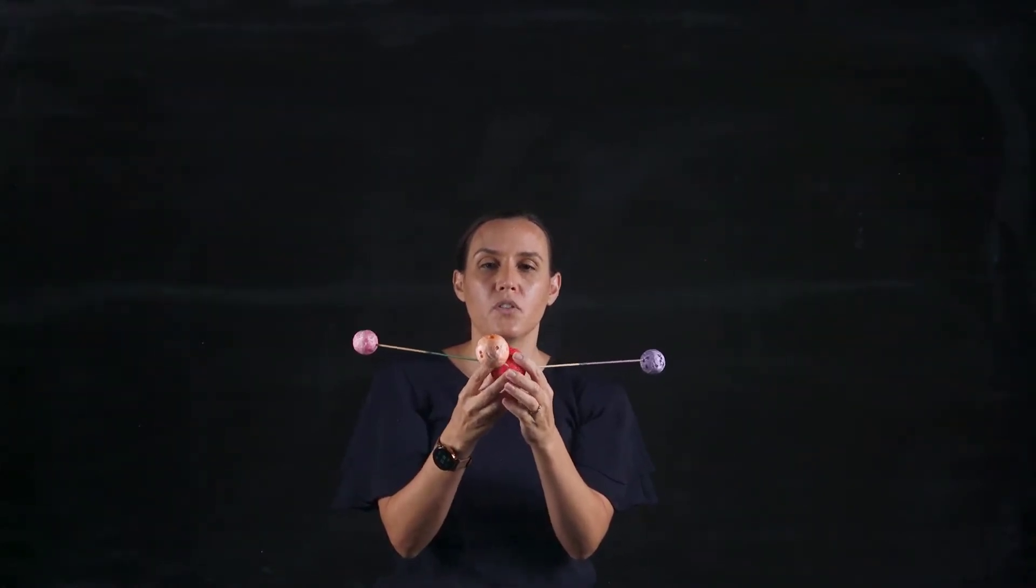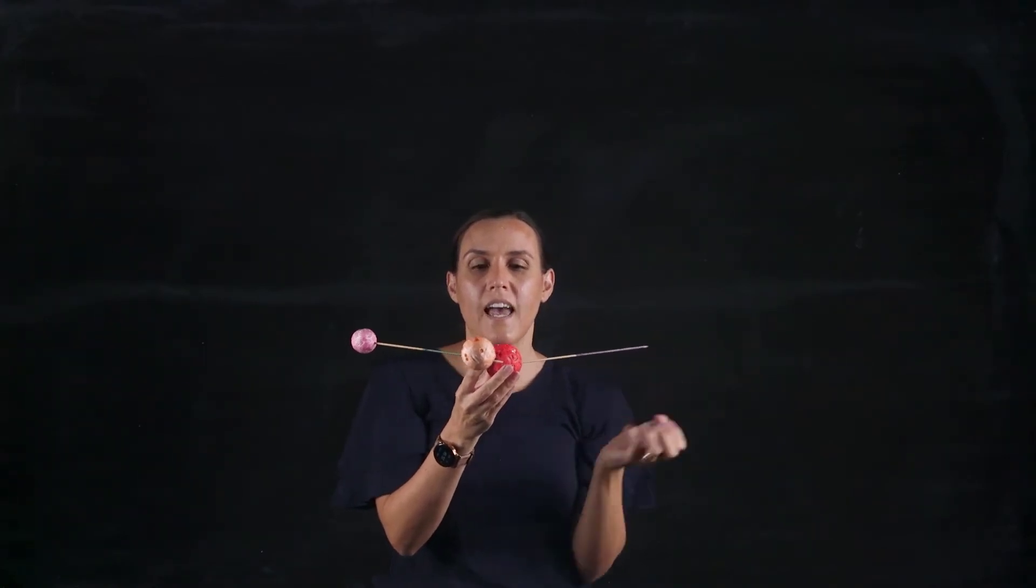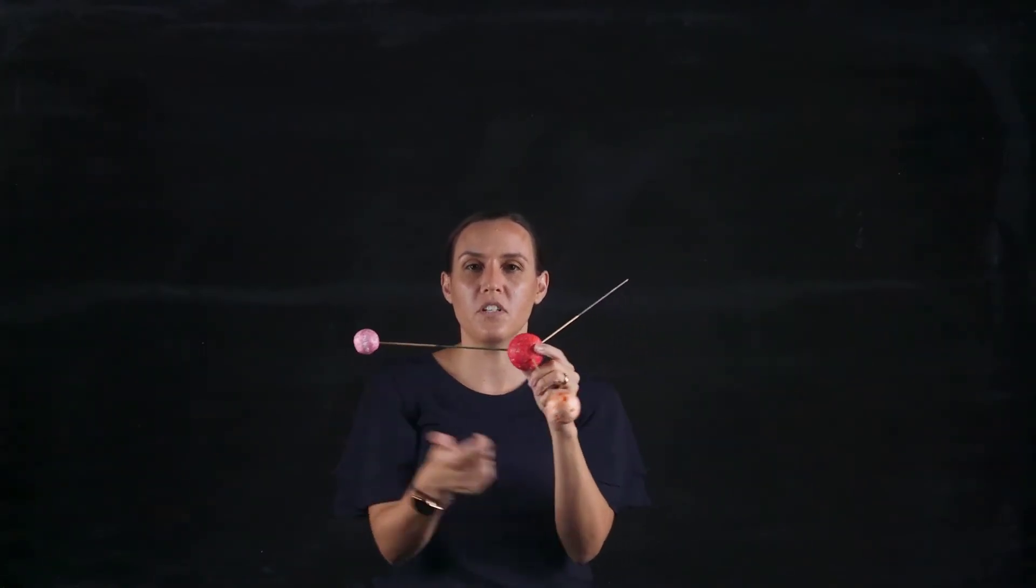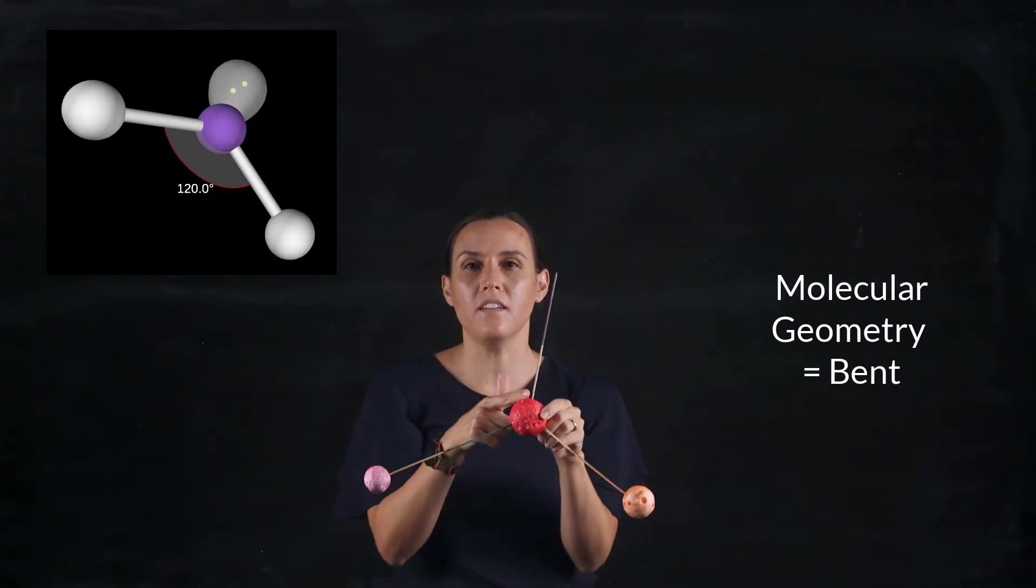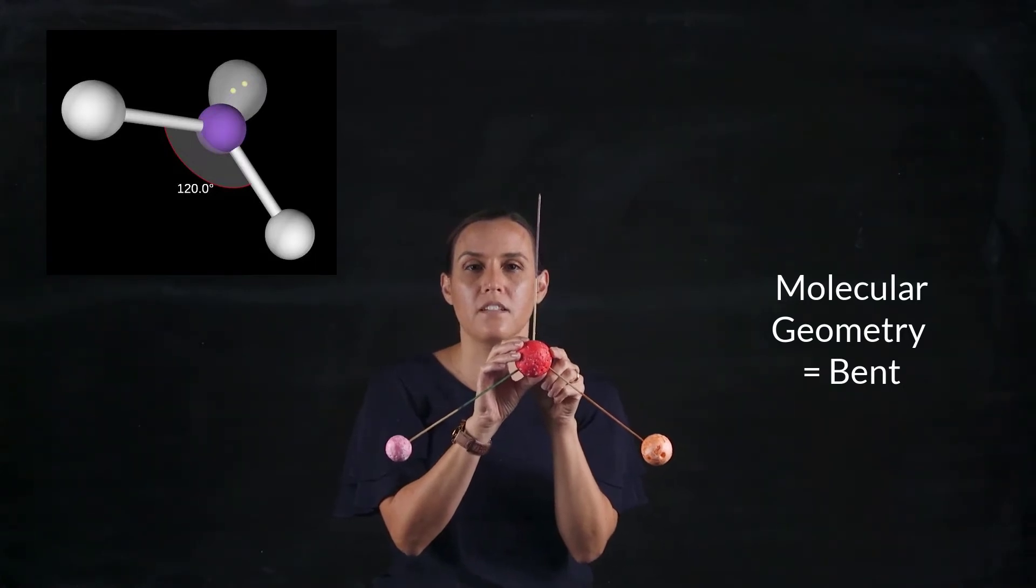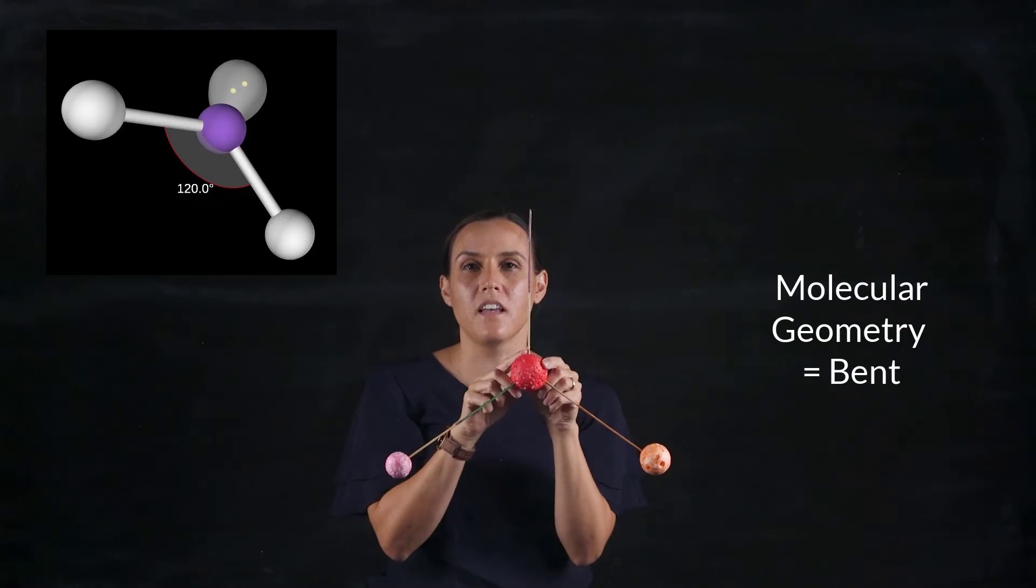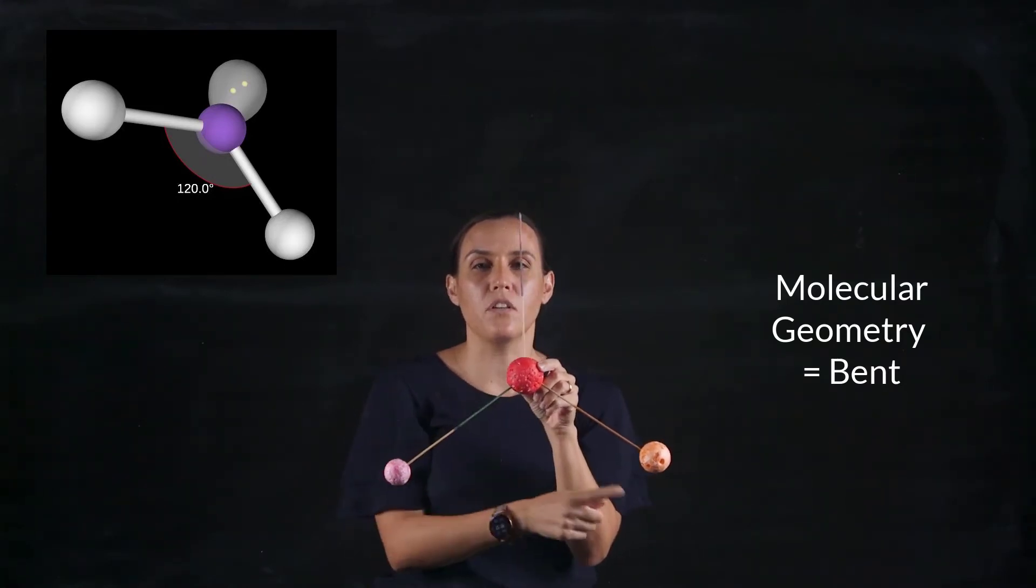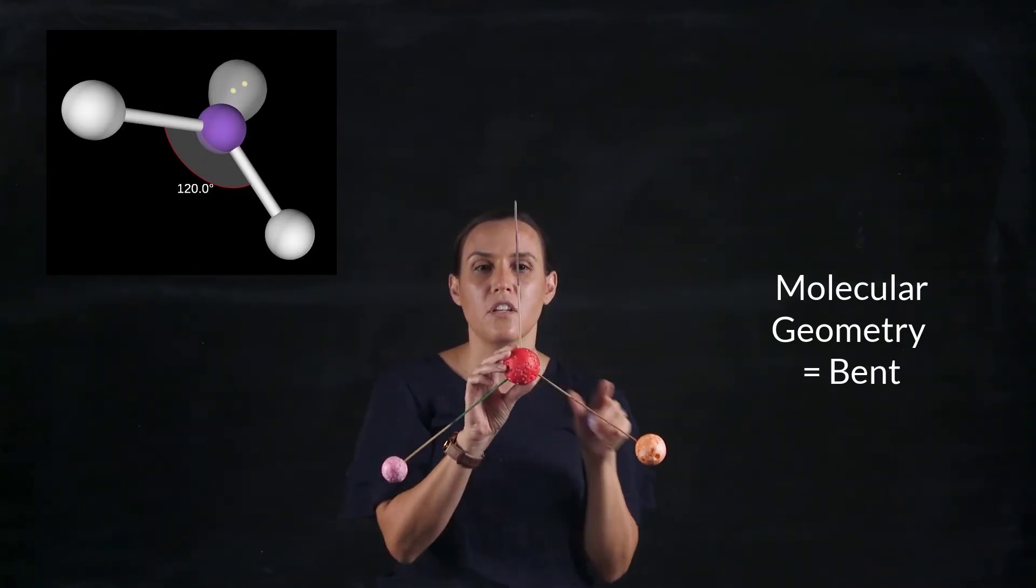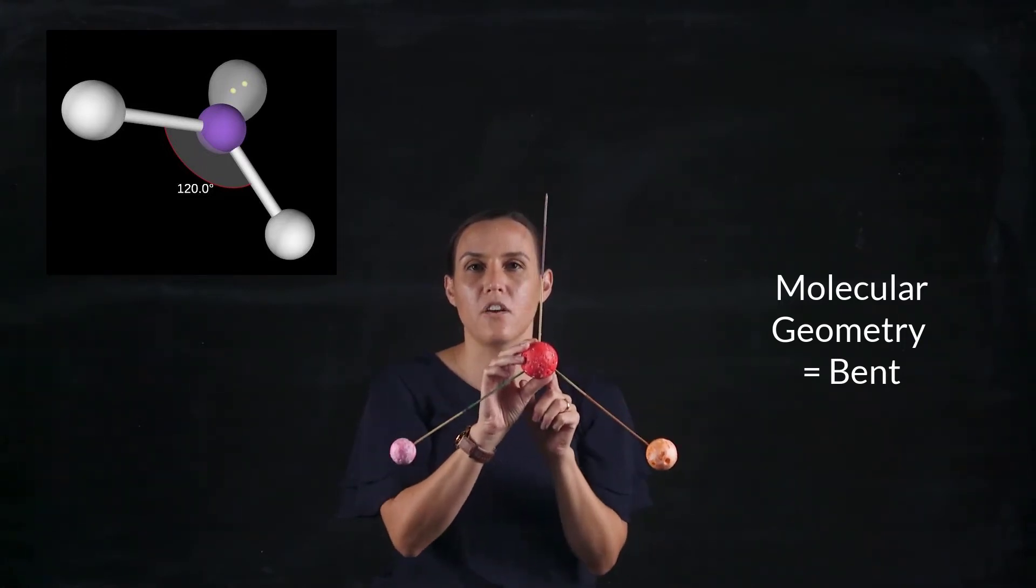Now if we were to replace one of those atoms and instead I had a central atom with two bonding atoms and one lone pair, that would give us a bent geometry or bent shape for that particular compound. The lone pair is still taking up the same amount of space but you don't see that when you look at the shape. So you're just looking at the shape between the atoms. So we've got a bent conformation.